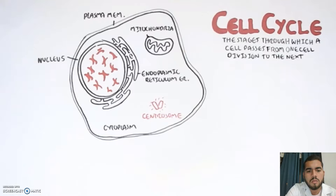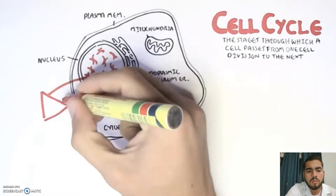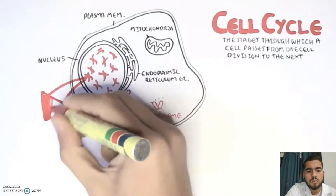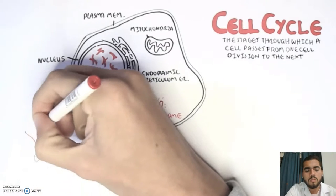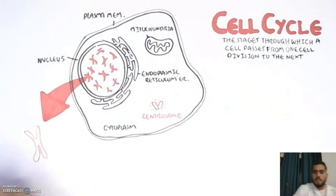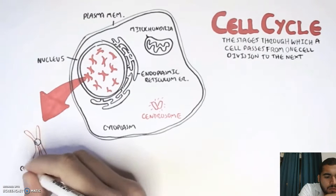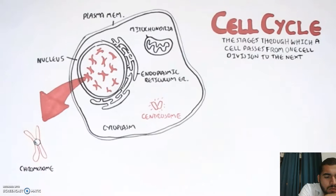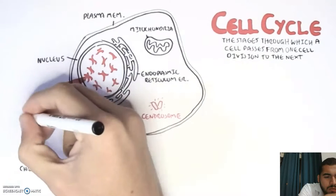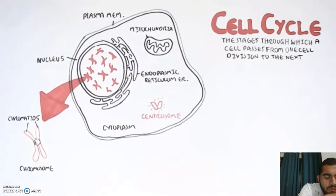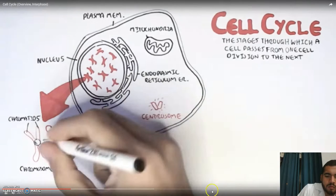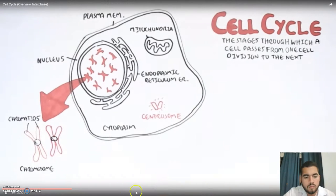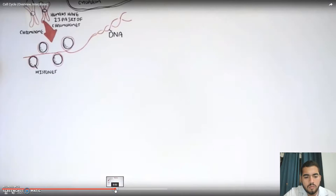Centrosomes are important in cell division because it actually helps in separating the cells with its microtubules. Now, within the nucleus, the main base of the cell, we find our genetic material. The genetic material is DNA, right? But the DNA is packaged up to form chromosomes. So here is one chromosome. This particular chromosome is made up of two chromatids. Here is another chromosome with two chromatids.